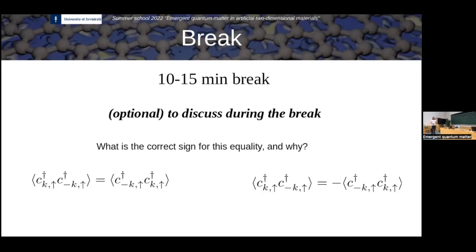This is important because these kinds of terms are superconducting terms. What the term on the right actually means is that the superconducting order is odd in momentum space — when you switch momentum, you get minus the superconducting order. For S-wave superconducting order, this was not the case; it was uniform in momentum space, just a specific complex number, and therefore it was even. So this superconducting order is automatically odd from the algebraic properties of the creation and annihilation operators, and this is a spin triplet superconducting order.